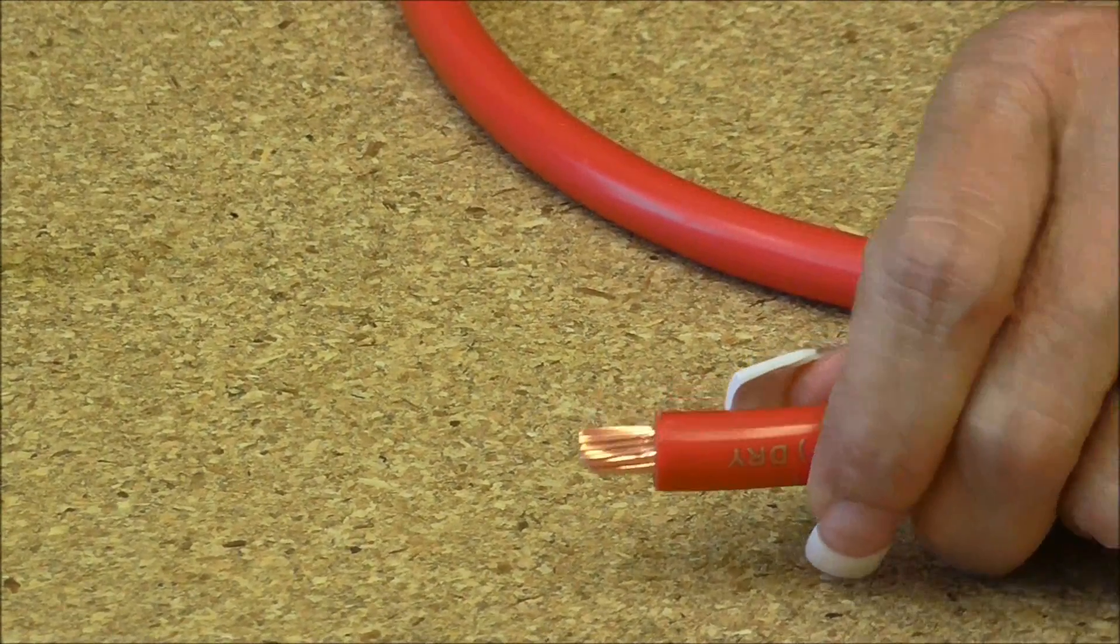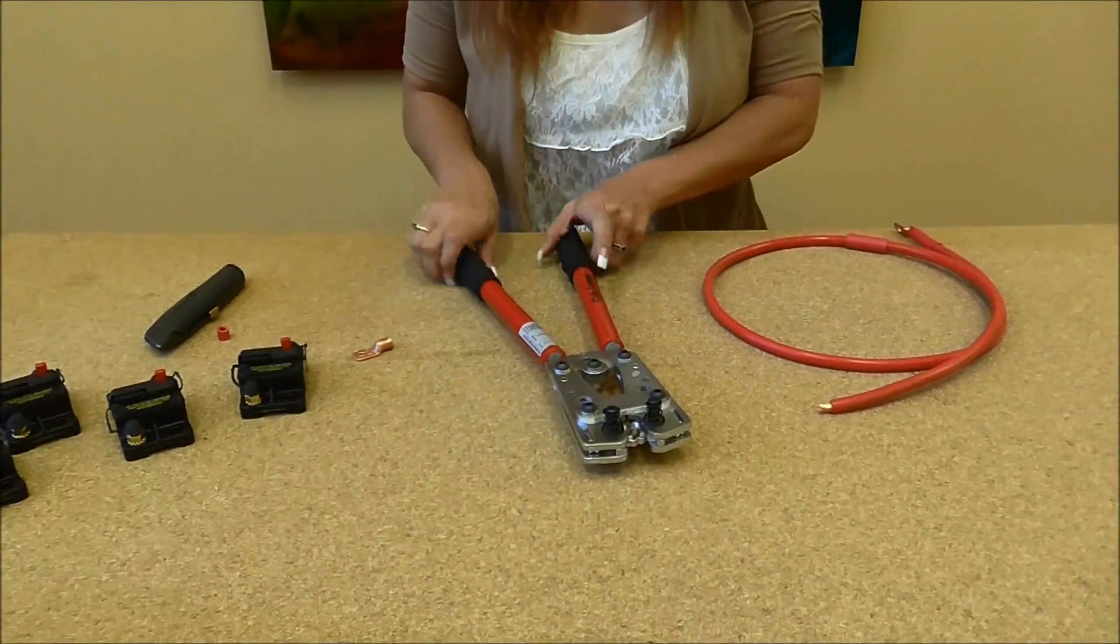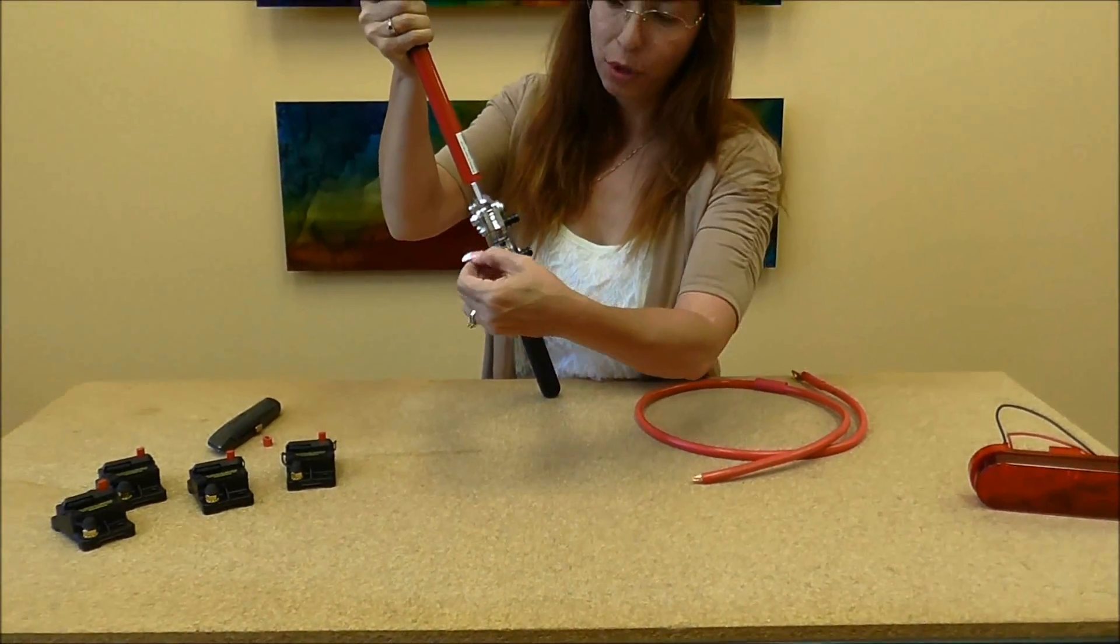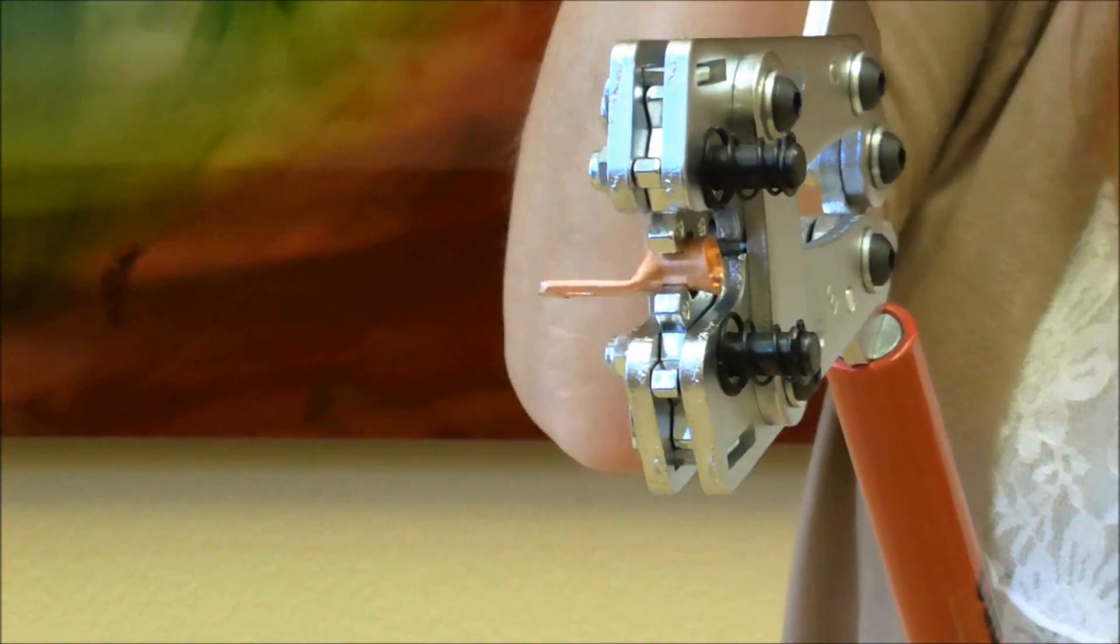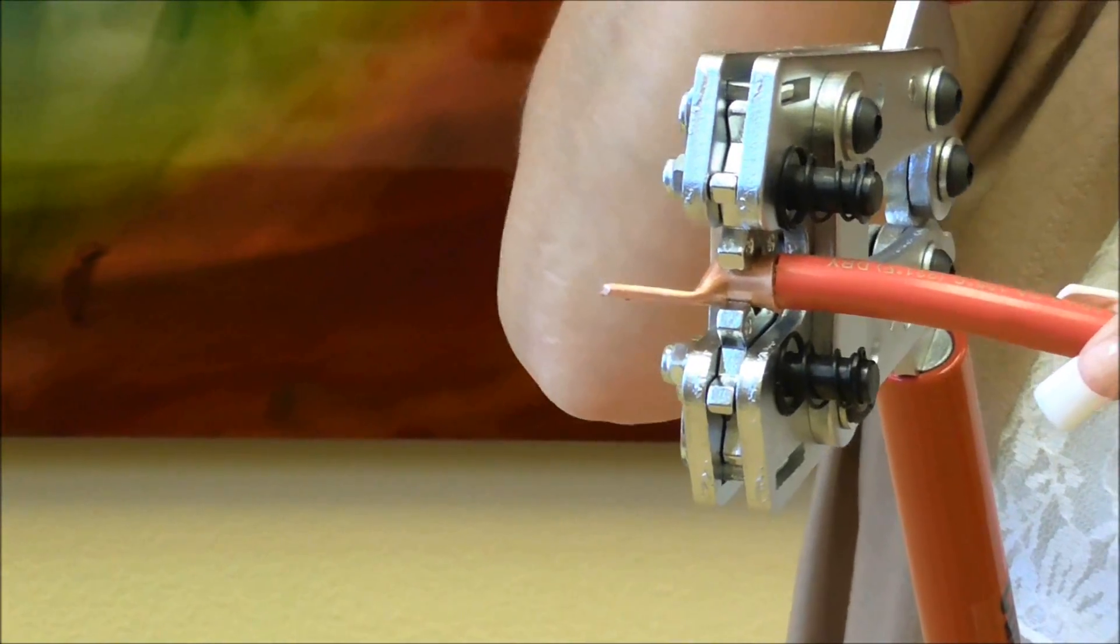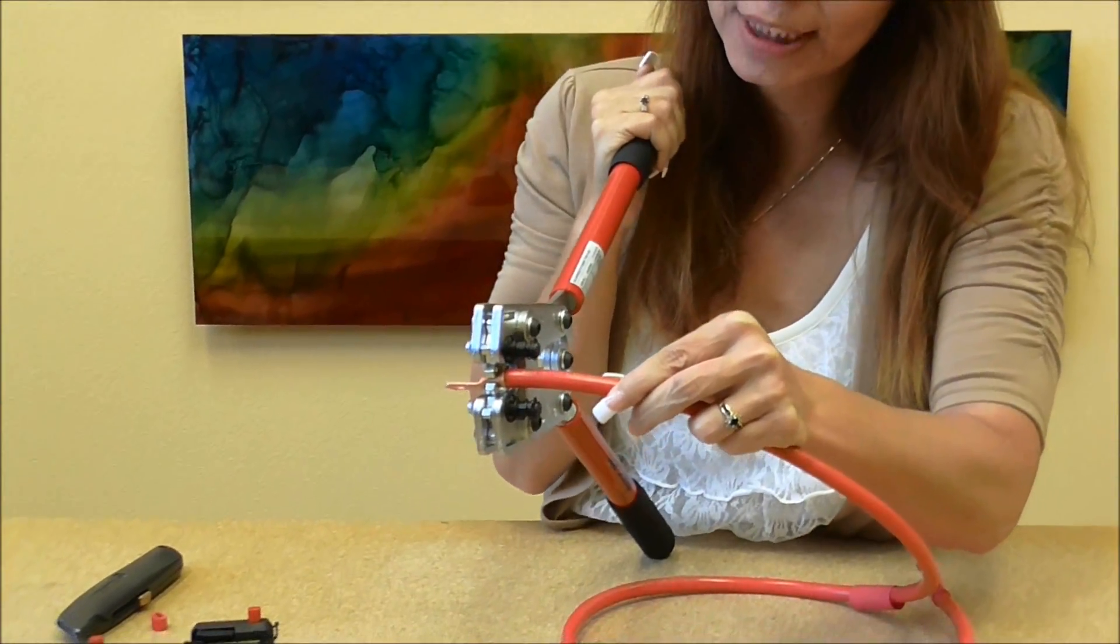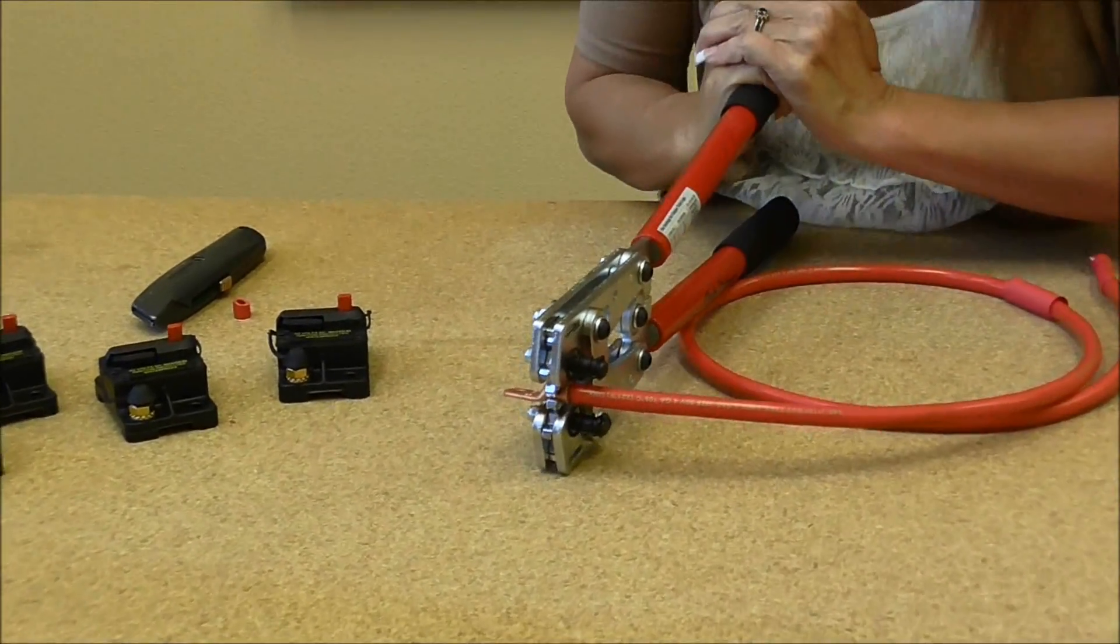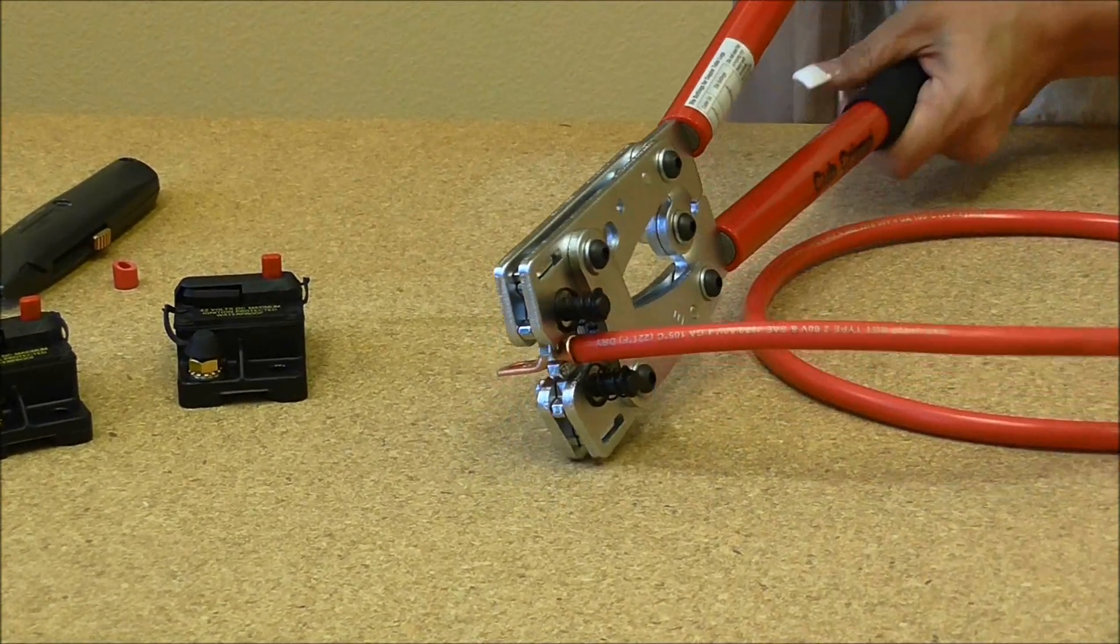This is a junior crimper. Open the jaws, take your copper lug and stick it in between the teeth. Then you're going to take your cable and just put it right in there, and then squeeze it. So I'm pushing the handle down towards the table and it's going to go as far down as it can. When it does, it's actually finished. You can't push it any farther and that is closed, so I open it back up.